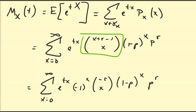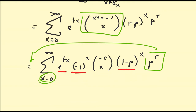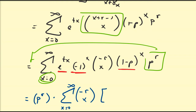Since the summation only depends on x, p^r can be factored outside. Notice that e^(tx), (-1)^x, and (1-p)^x all have a power of x, so I can combine them. This gives p^r times the sum from x=0 to infinity of (-r choose x) times (-e^t(1-p))^x.